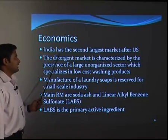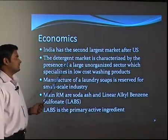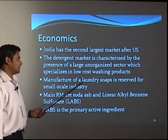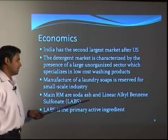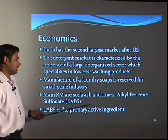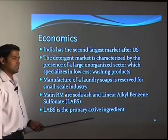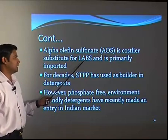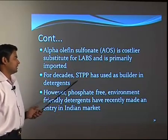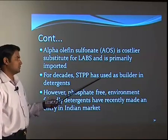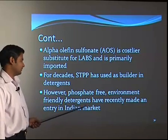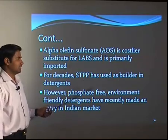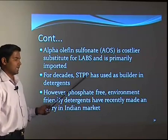Looking at the economics, India has the second largest detergent market after the US. The detergent market is characterized by the presence of a large unorganized sector specialized in low cost washing products. Manufacture of laundry soaps is reserved for small scale industry. The main raw materials are soda ash and linear alkyl benzene sulphonate, that is LAB, which is the primary active ingredient in detergent. Alpha olefin sulphonate, AOS, is a cost-effective substitute for LAB and is primarily imported. Sodium tripolyphosphate has been used as a builder in detergents for decades; however, phosphate-free environment-friendly detergents have recently entered the Indian market. Generally nowadays the detergents being produced are straight chain detergents to have more biodegradability.